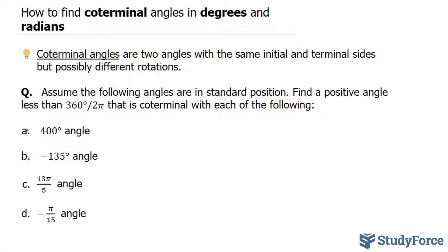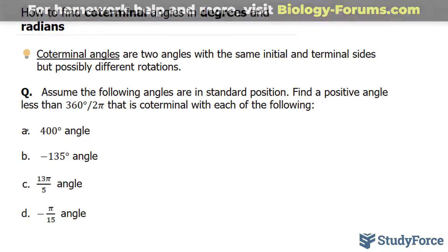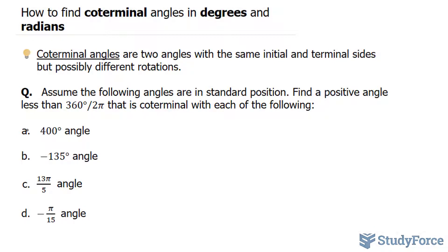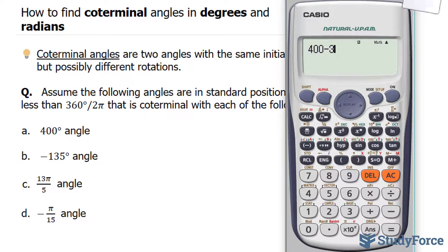In example A, we have 400 degrees as our angle. We have two options here. We can either add 360 or subtract 360. If we add 360 to 400, that's going to give us a number that's greater than 360, so we have to subtract 360 from that. 400 minus 360 gives us an angle of 40, and 40 is coterminal to 400.